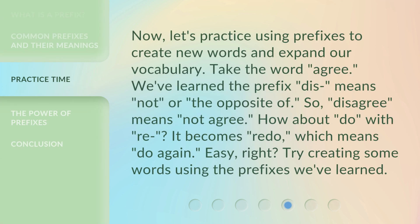Now, let's practice using prefixes to create new words and expand our vocabulary. Take the word 'agree'. We've learned the prefix 'dis' means 'not' or 'the opposite of'. So, 'disagree' means 'not agree'. How about 'do' with 're'? It becomes 'redo', which means 'do again'. Easy, right? Try creating some words using the prefixes we've learned.